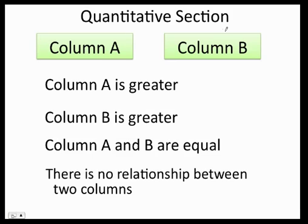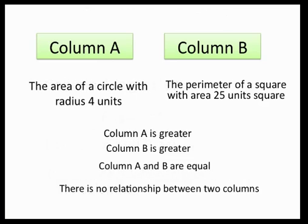Now for the quantity comparison section you're going to have two columns and you will have the following choices: either column A is greater, column B is greater, column A and B are equal, or there's no relationship between the two columns. Let's say they give you something like this: column A says the area of a circle with radius four units, and column B tells you the perimeter of a square with area 25 units squared.